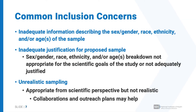There are some common concerns that come up in peer review of inclusion. First, you may have inadequate information describing the sex or gender, race, ethnicity, or age of the sample. This information may be missing altogether, or you may not provide enough information for peer review to determine whether your plan is acceptable. For example, just saying 'we will not exclude any groups' is generally not considered sufficient for peer review to make that determination.